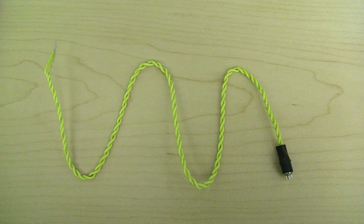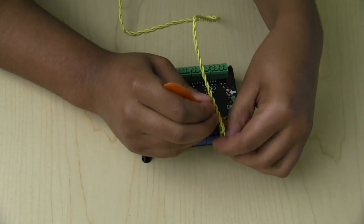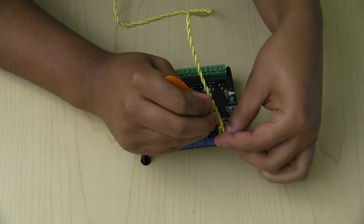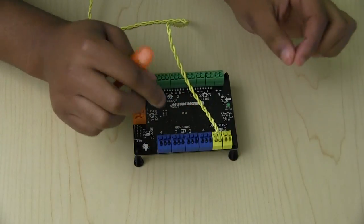To connect a vibration motor to the Hummingbird Duo, connect one of the yellow wires into the plus terminal and the other into the negative. It does not matter which wire is connected where. Just make sure they are connected to the same terminal block.